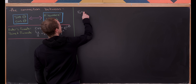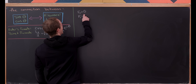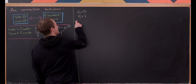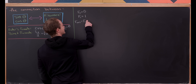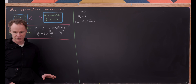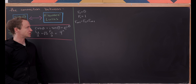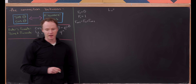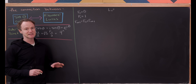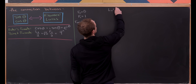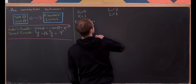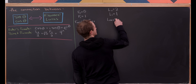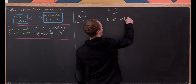Let's recall how these numbers are defined. The Fibonacci numbers are defined by F₀ = 0, F₁ = 1, and then Fₙ₊₂ = Fₙ + Fₙ₊₁ — so one term is equal to the sum of the previous two terms. Lucas numbers are defined almost the same, except the seeds are different: L₀ = 2, L₁ = 1, and the recursion is the same: Lₙ₊₂ = Lₙ + Lₙ₊₁.